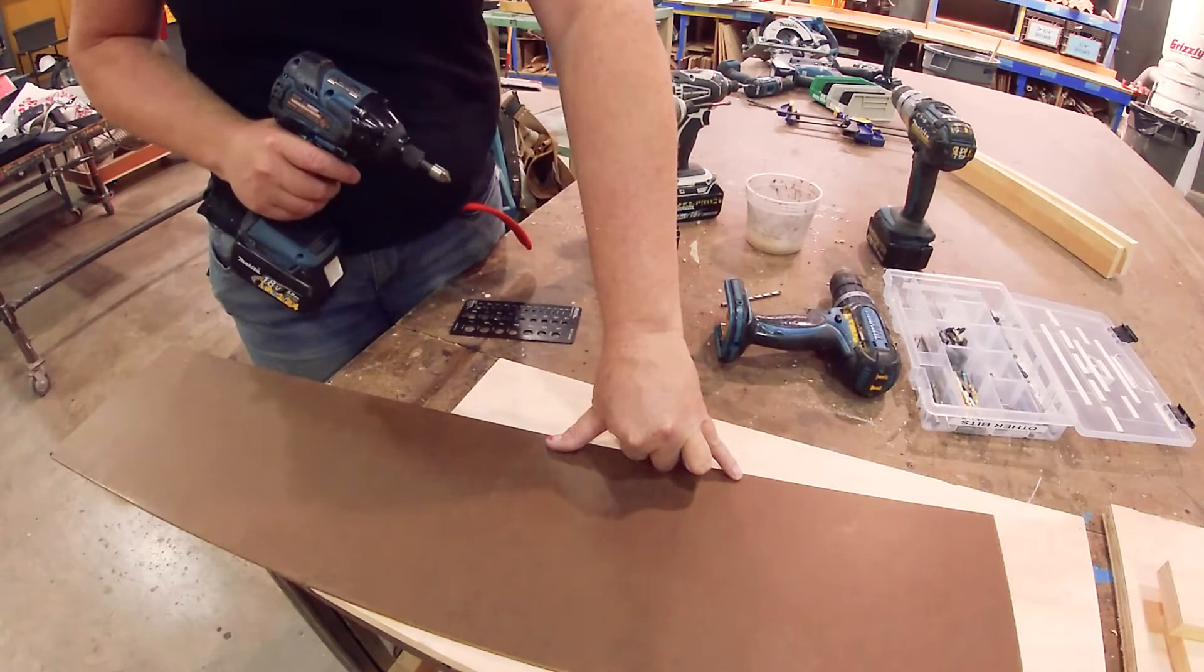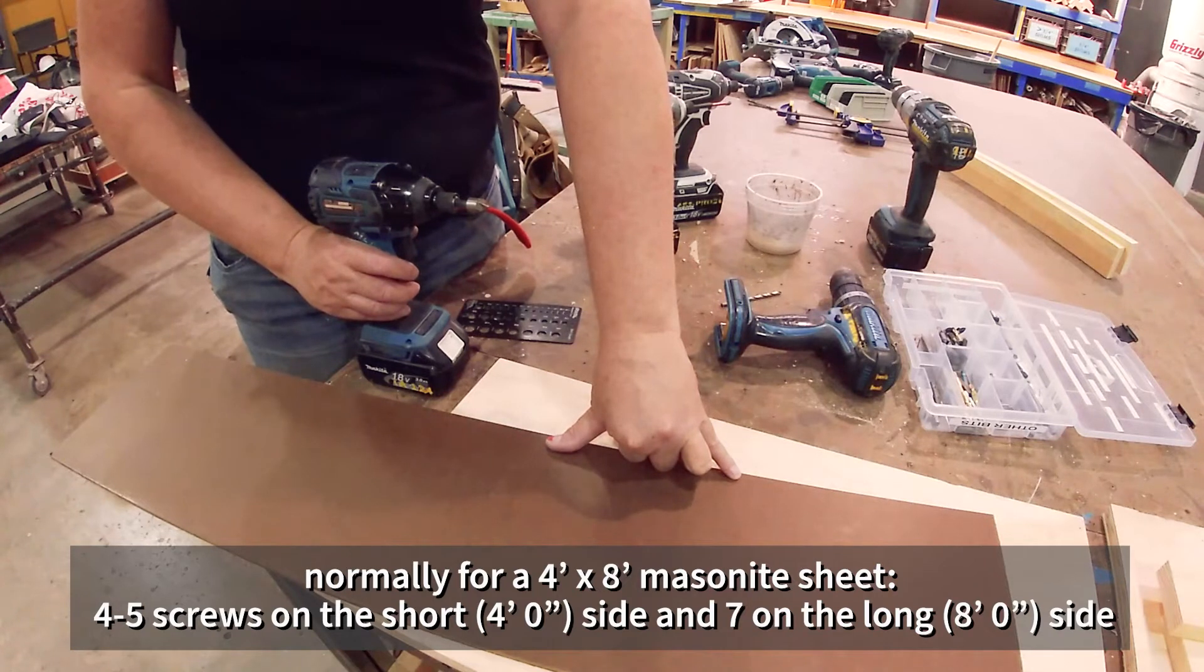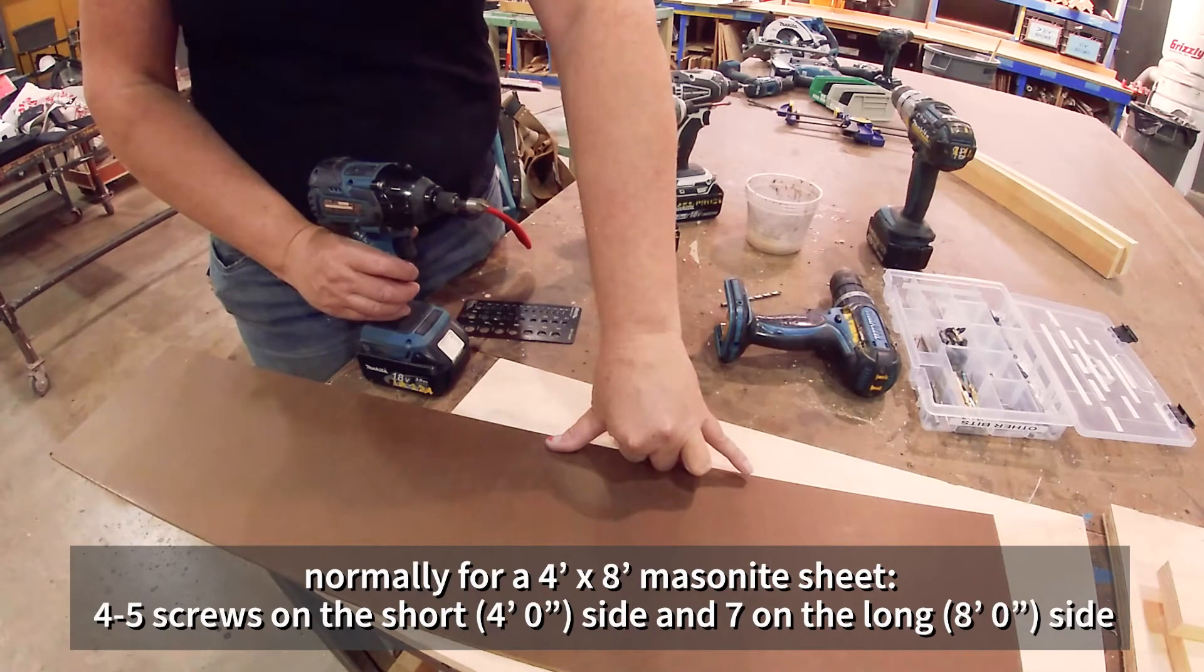For masonite, on a four foot side we'll do one in each corner and then two or three - one in the middle and then one more on each side. So that's actually a little bit bigger than six to eight inches apart.